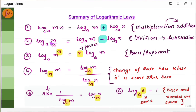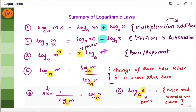Similarly, log m by n is log m minus log n. That is, if you have division, then it will become subtraction. And the third one is log m to the power n — if you have a power, then it's going to be n into log m. n is the power.